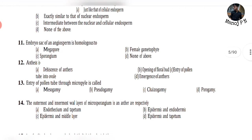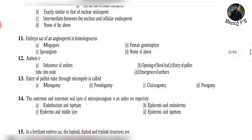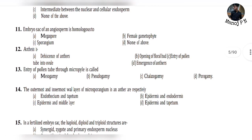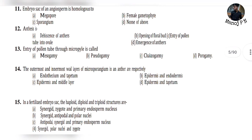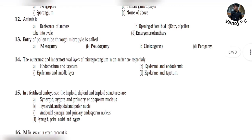Question 11: The embryo sac of angiosperms is homologous to what? It is homologous to the female gametophyte. The embryo sac of angiosperms is homologous to the female gametophyte.